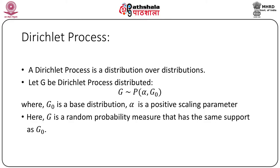Now let's talk about what a Dirichlet process is. A Dirichlet process is a distribution over distributions. Let G be Dirichlet process distributed with parameters alpha and G_0. We call G_0 the base distribution and alpha (or A) is a positive scaling parameter. G is a random probability measure that has the same support as G_0.